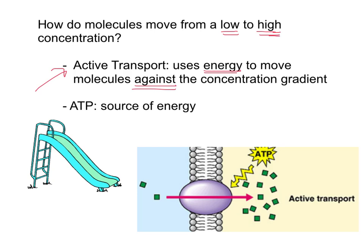Our source of energy for active transport is something called ATP. When you hear ATP, you've got to think energy — we'll see that again and again this year, but this is one of the first places we encounter it. Looking at the diagram, we are now going from where there is a low concentration to a high concentration, and it requires energy to go in that opposite direction.